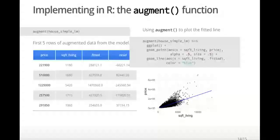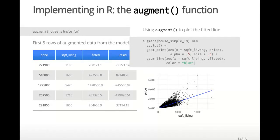The augment function from the broom package allows us to access information about the observations after the model was applied. This includes residuals, dot resid, and fitted values, dot fitted. The first five observations are shown in the table on the left. There are other columns of data that I have omitted since we will not use them now.